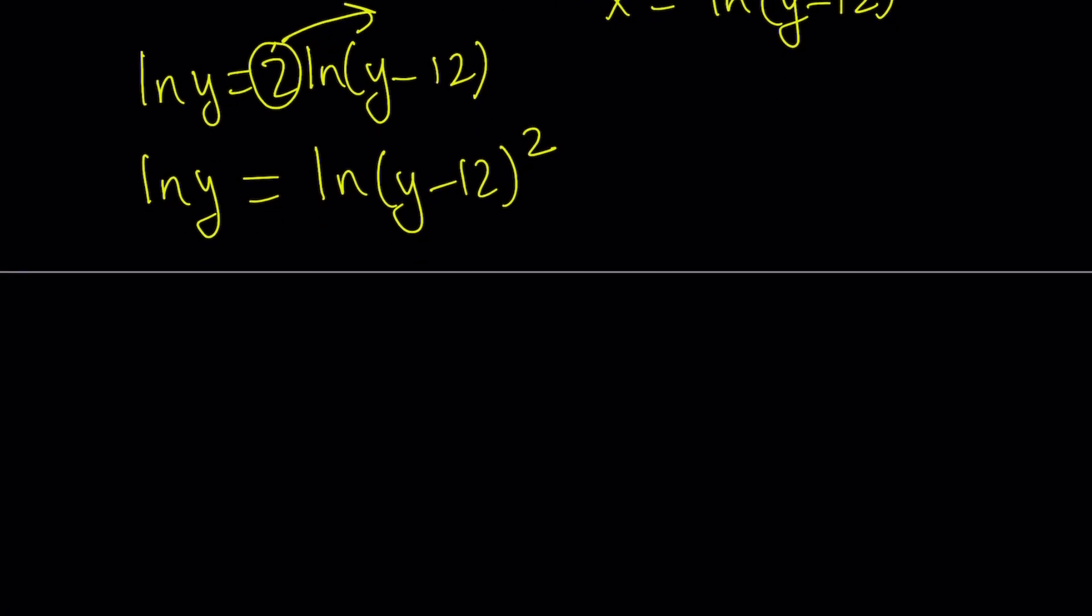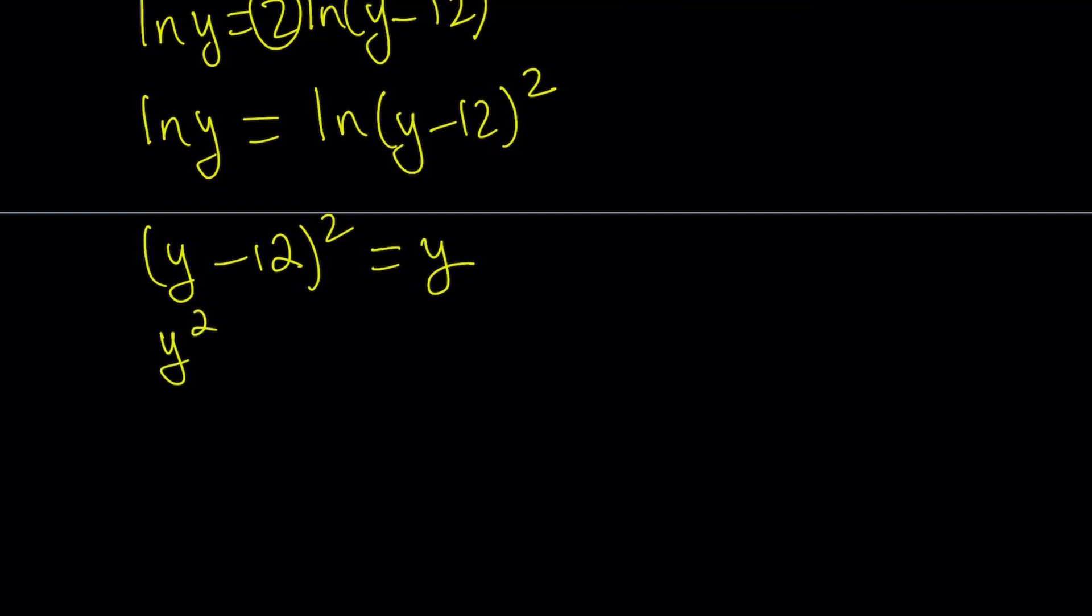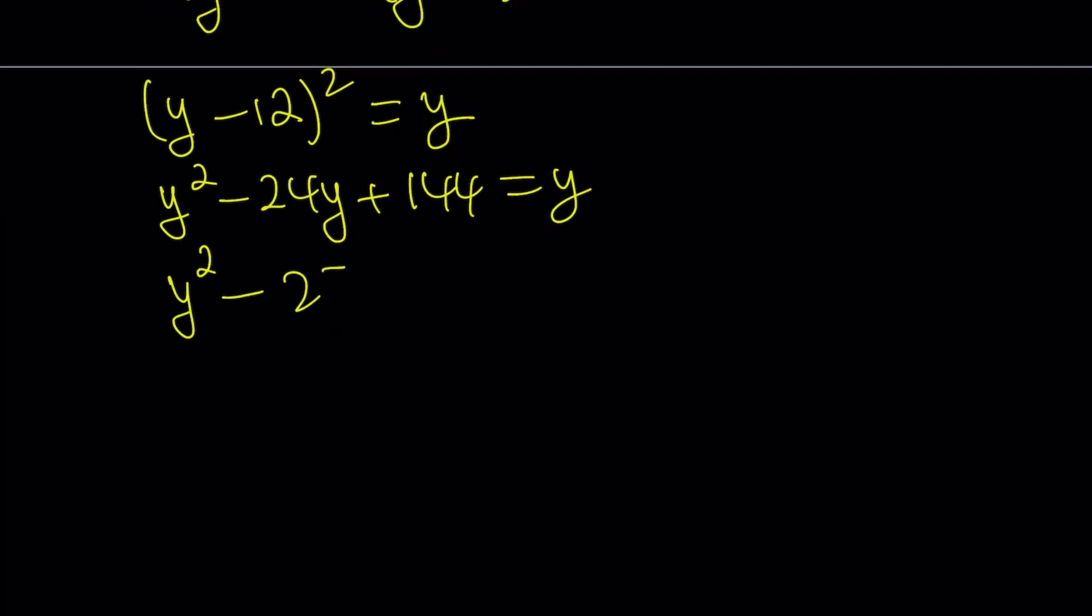So now, at this point, we have ln's on both sides, which means that these 2 things are equal, or we can do e to the power of both sides, which is going to give you the same thing. So we get (y - 12)^2 = y, and if you expand it, you get y^2 - 24y + 144 = y, and to subtract the y, you get y^2 - 25y + 144. So you're basically looking for two numbers whose product is 144 and whose sum is -25, and those numbers are -16 and -9. So in other words, this is factorable, and you can write it as (y - 9)(y - 16) = 0.